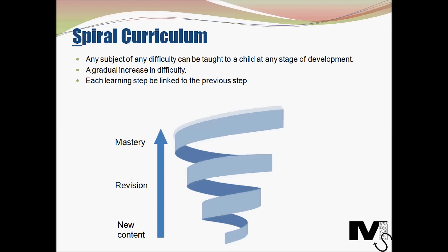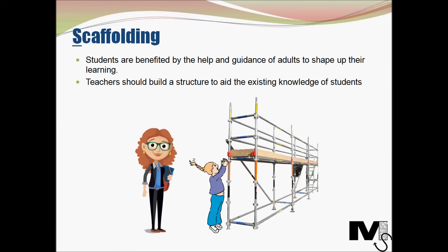We now look at a concept called scaffolding. Brunner agreed with Vygotsky about the role of the social environment in a child's learning — students are benefited by the help and guidance of adults to shape up their learning. They essentially learn by themselves but need guidance and support from adults and their learning environment. It's called scaffolding because the idea is like scaffolding used to aid building a structure — the scaffolding is not the structure itself, but acts as an aid. Teachers should therefore build a scaffolding to aid the existing knowledge of students, demonstrate the process of learning, and then supervise and guide the students as the learning process continues.